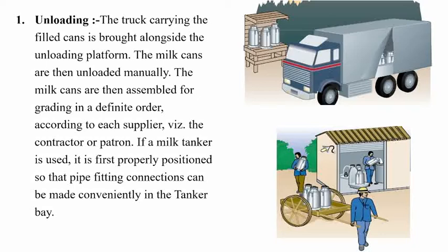The milk cans are assembled for grading in a definite order according to each supplier. When filled cans arrive, they are put in line in order. If a milk tanker is used, the first priority is to make the pipe fitting connections on the milk tanker, and then we connect the hose pipe to store the milk in the other tanks.